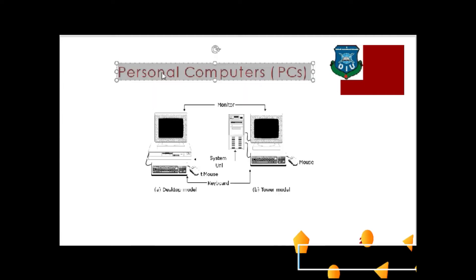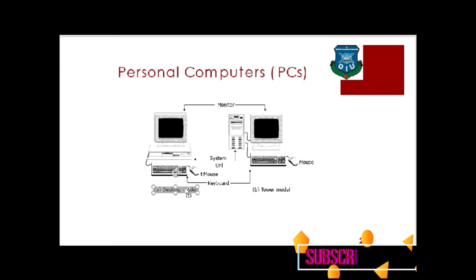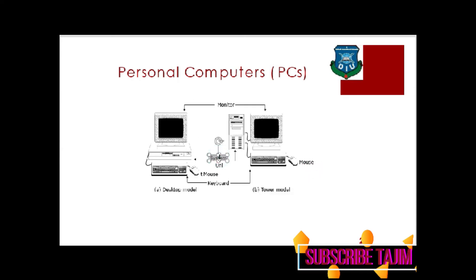Personal computers come in two models: A. Desktop model and B. Tower model. Components include mouse, system unit, monitor, and keyboard.